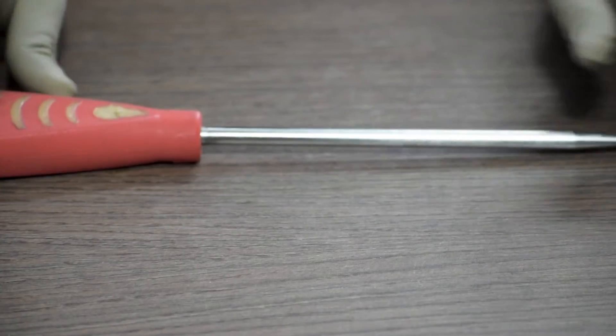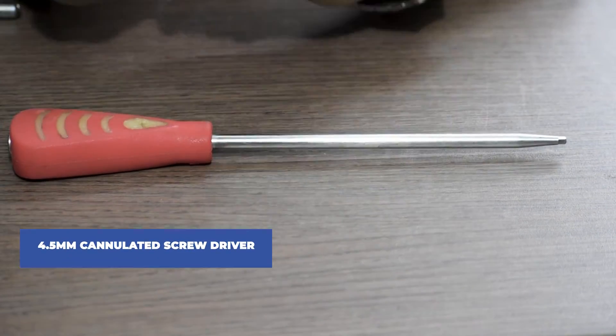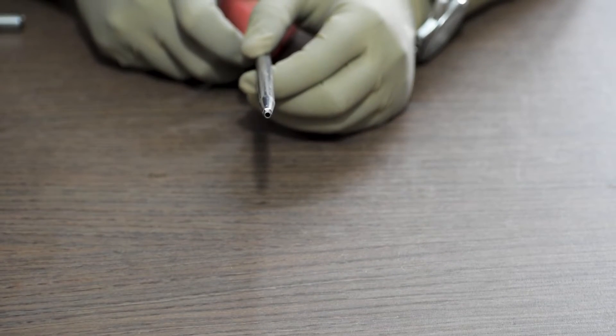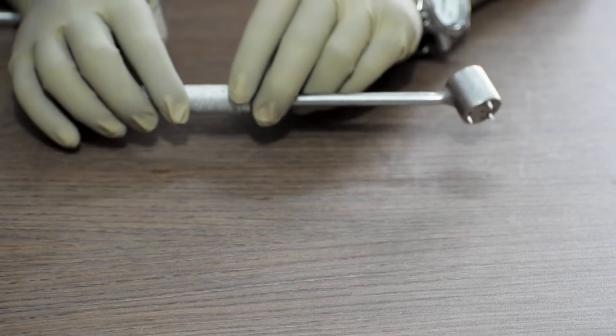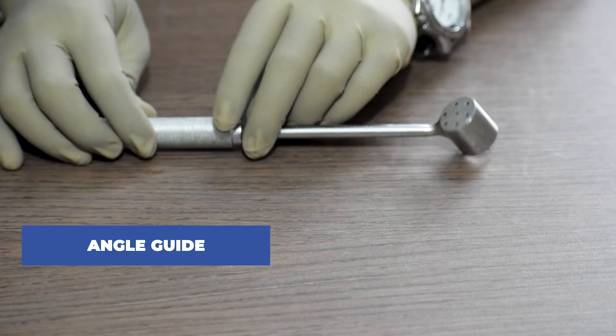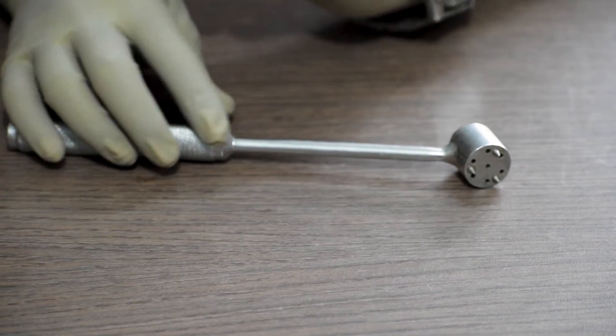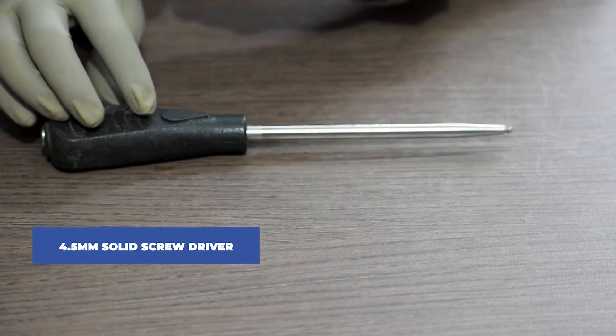Coming to screwdrivers, this one is a 4.5mm cannulated screwdriver. See, here it's cannulated. Next, we will require an angle guide. This is a very vital piece of instrument. Next, we will require a 4.5mm solid screwdriver.